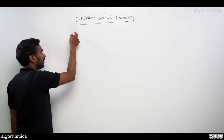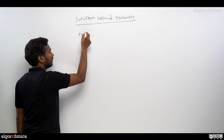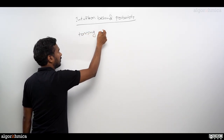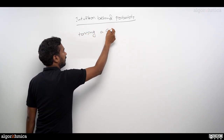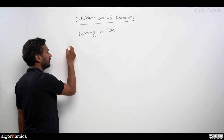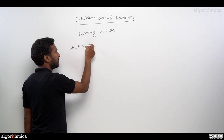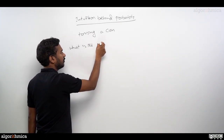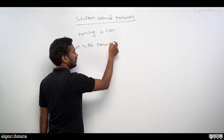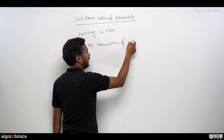The simplest experiment I am really going to take here is tossing a coin. What do you want to know in this? What do you want to investigate? What is the probability of getting a head?